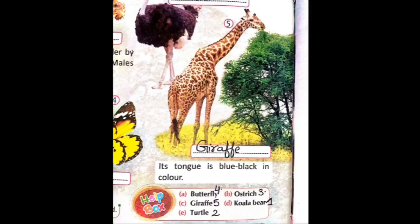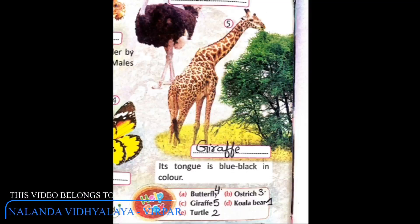Now the fifth picture: its tongue is blue-black in color. The correct answer is giraffe. Giraffe ki jo tongue hoti hai, woh blue-black color ki hoti hai.